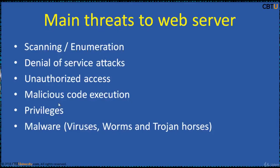The next threat is unauthorized access. Strengthen permissions and user access controls, secure web server user access permissions, and use .NET framework access control mechanisms including URL authorization. An attacker may run malicious code on the web server to compromise it through weak configuration and unpatched servers. To counter this, configure the web server to reject URLs with dot-slash to prevent path traversal, and lock down system commands and utilities with ACLs.